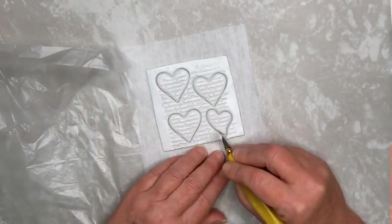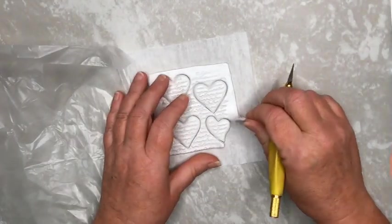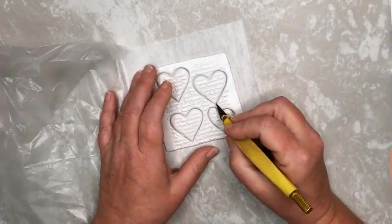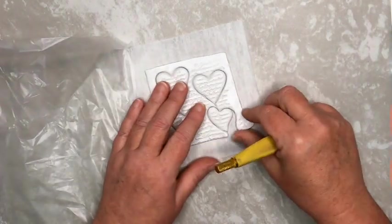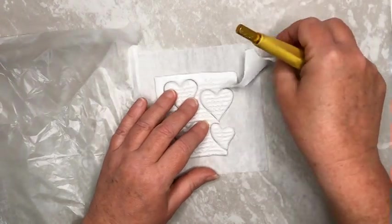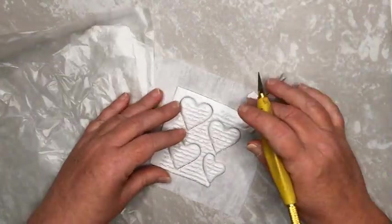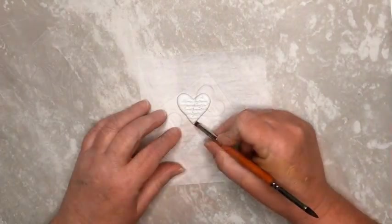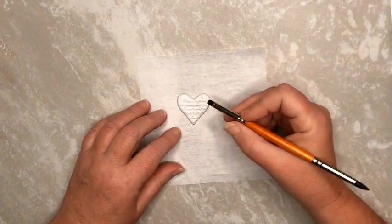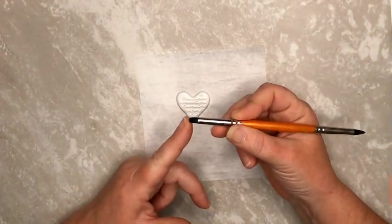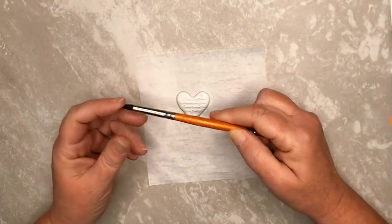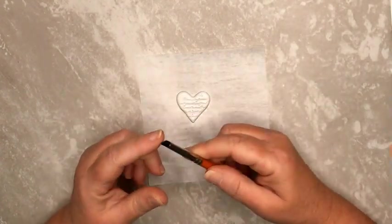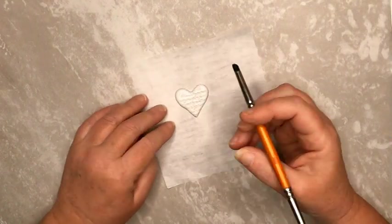Then remove any of the excess clay. Sometimes when plastic wrap is used, the cutter won't go all the way through the clay, so you may have to use a craft knife to trim out the shapes a little bit. Use your fingers or a clay shaper to neaten up the edges of your heart shapes, but don't bake the heart shapes yet.